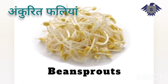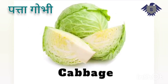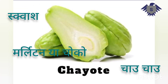Bean Sprouts — Ankurit Phaliyan. Pumpkin — Kaddu (some people also call it Kola). Cabbage — Patta Gobhi. Chayote — Squash, also called Marliton or Choko and Chow-Chow.